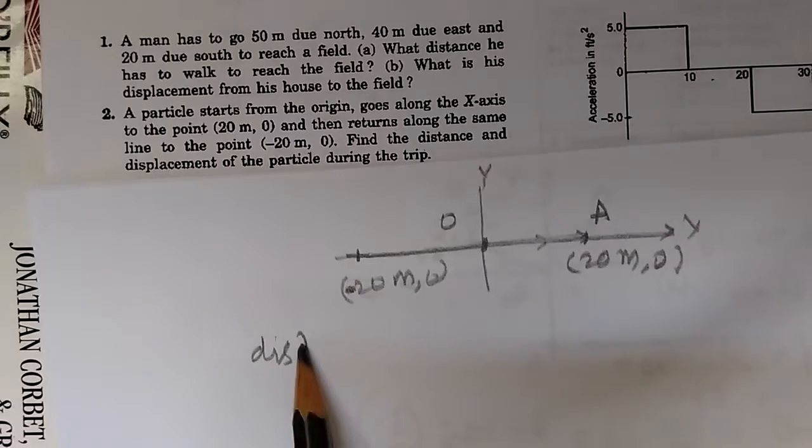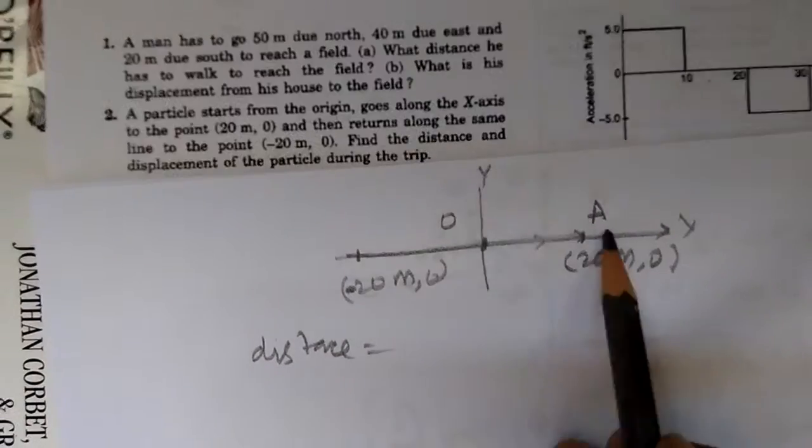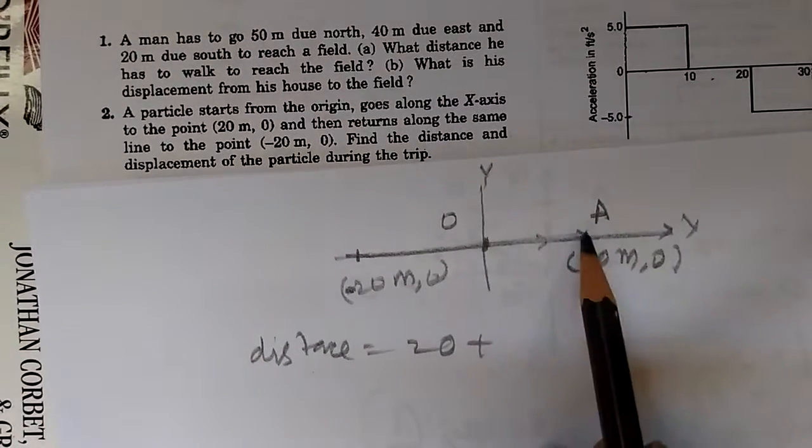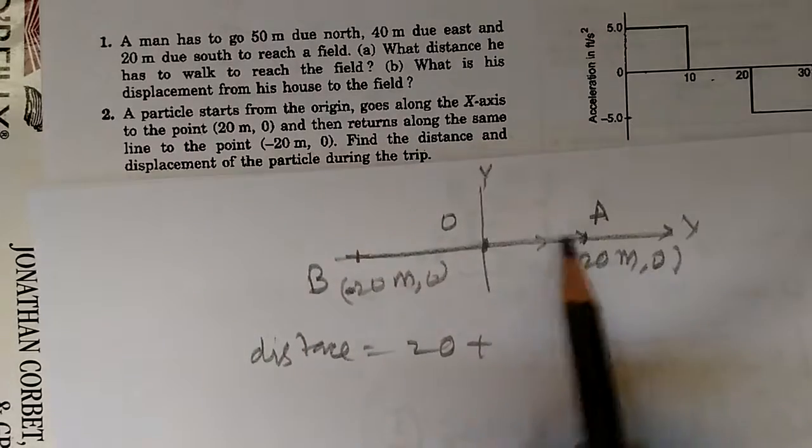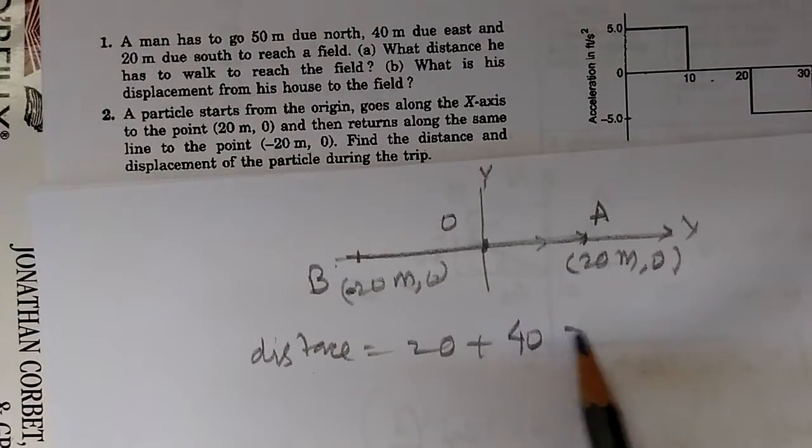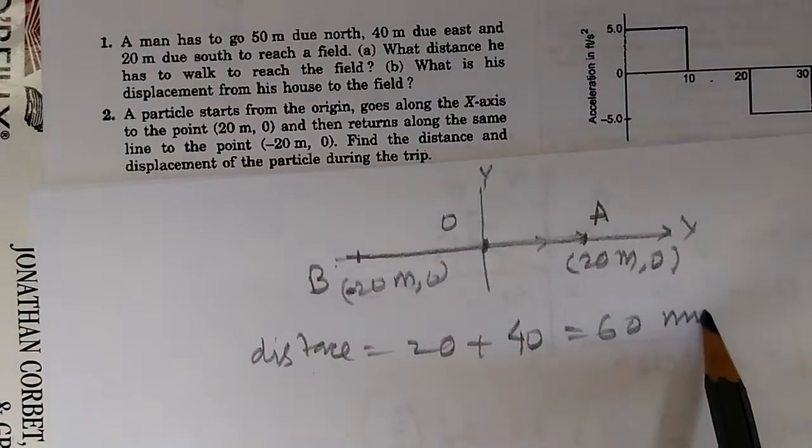So the total distance will be equal to, first it travels 20 meters here, and then we go from A to this point B, AB distance is 40 meters, so 20 plus 40 is equal to 60 meters.